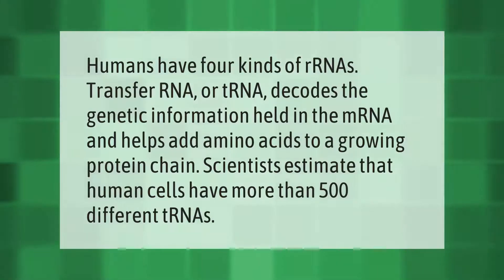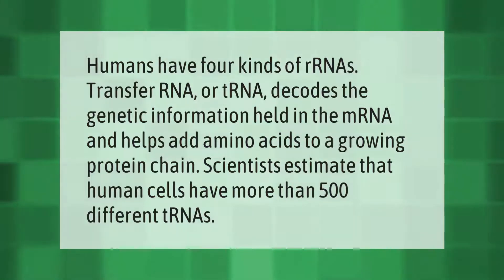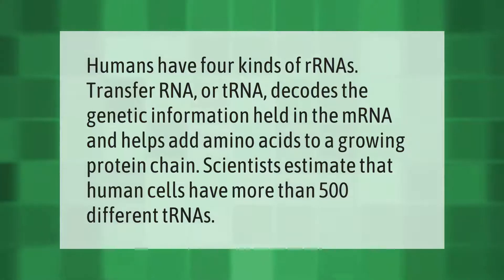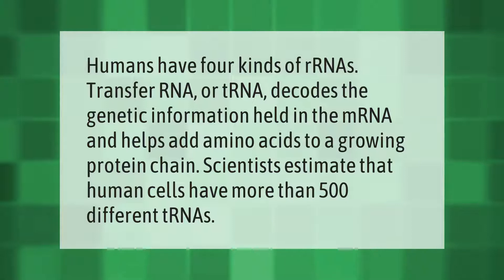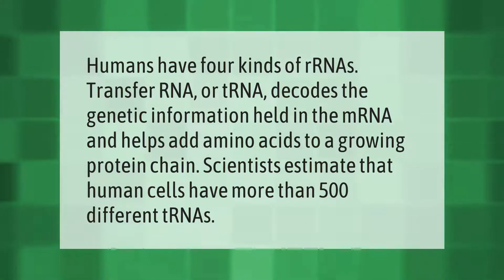Humans have four kinds of rRNAs. Transfer RNA, or tRNA, decodes the genetic information held in the mRNA and helps add amino acids to a growing protein chain. Scientists estimate that human cells have more than 500 different tRNAs.